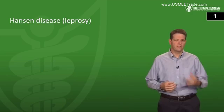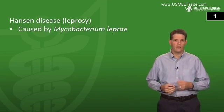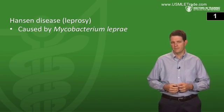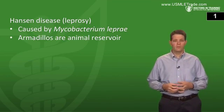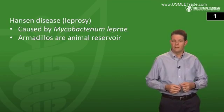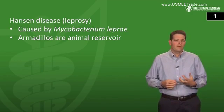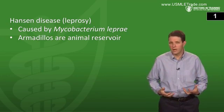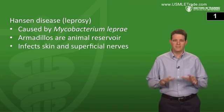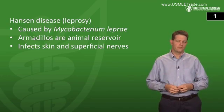First question: what organism causes Hansen disease? What animal serves as a reservoir for this organism in the US, and where in the body does this organism live? Hansen disease is also known as leprosy, which is caused by Mycobacterium leprae. The animal reservoir in the US is the armadillo, and M. leprae likes to live in the coolest parts of the body, which tend to be the skin and the superficial nerves.